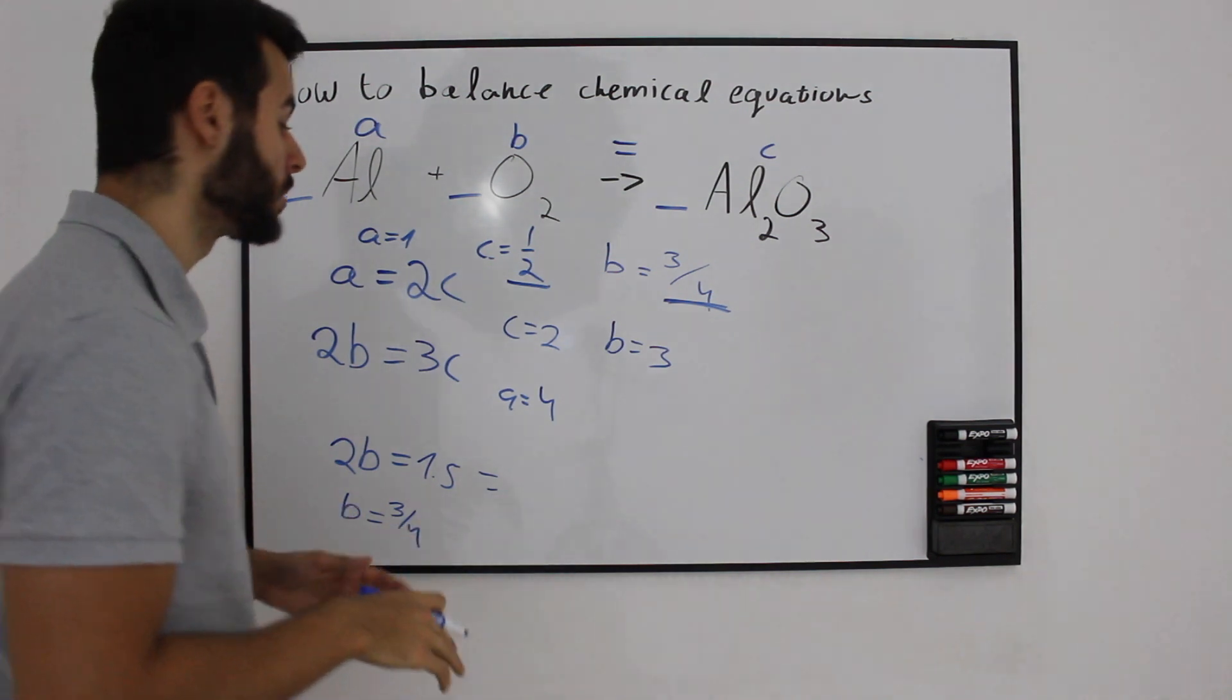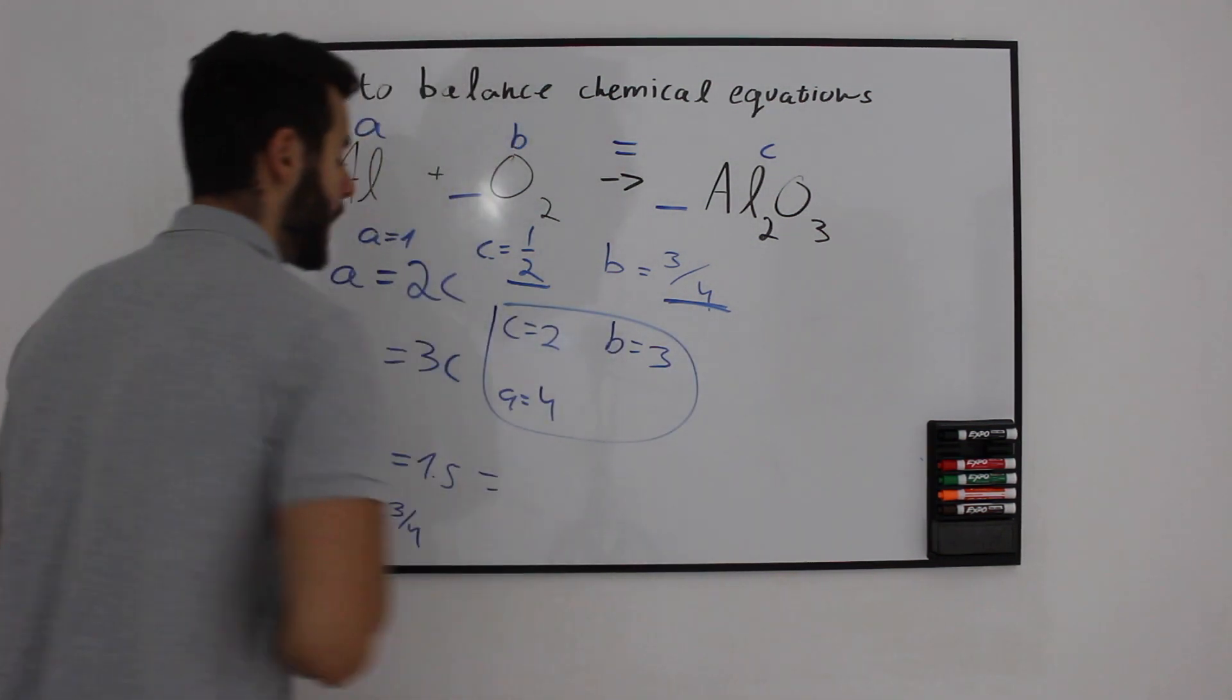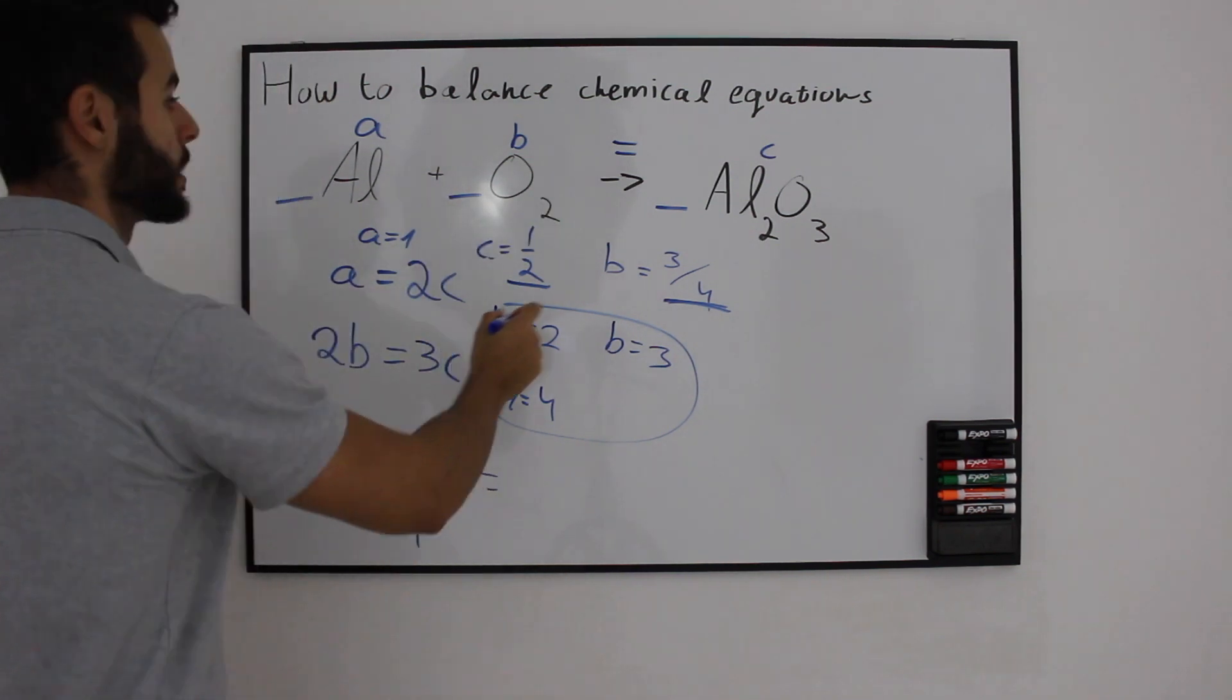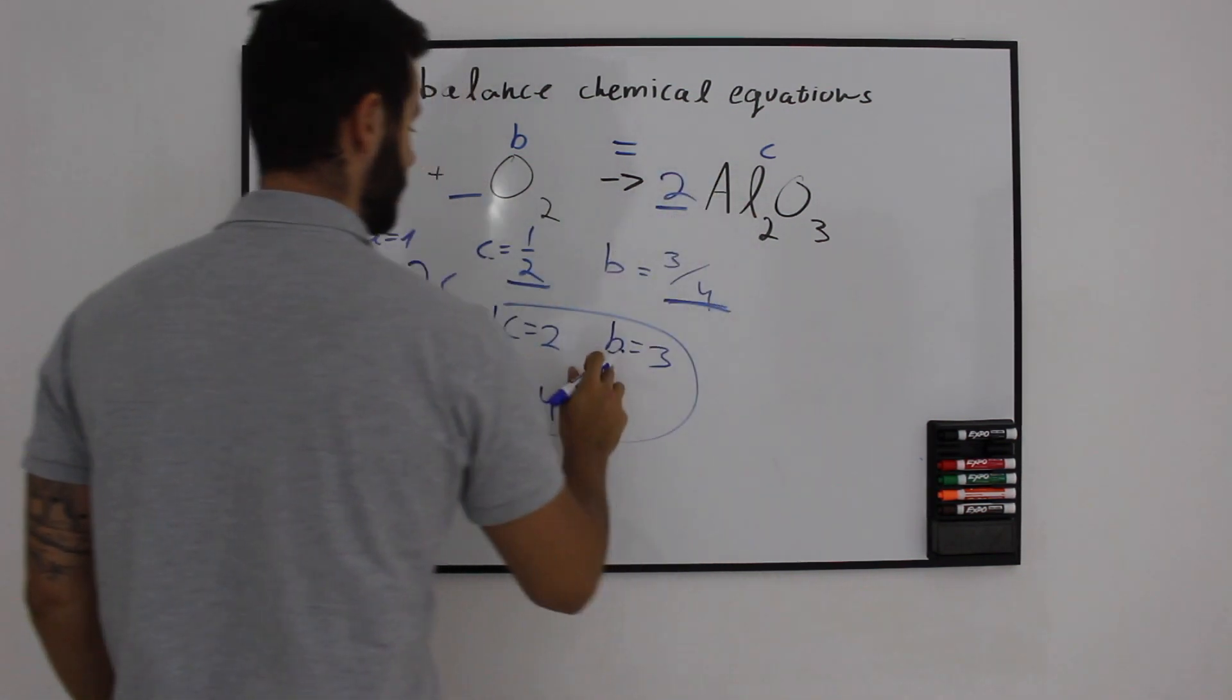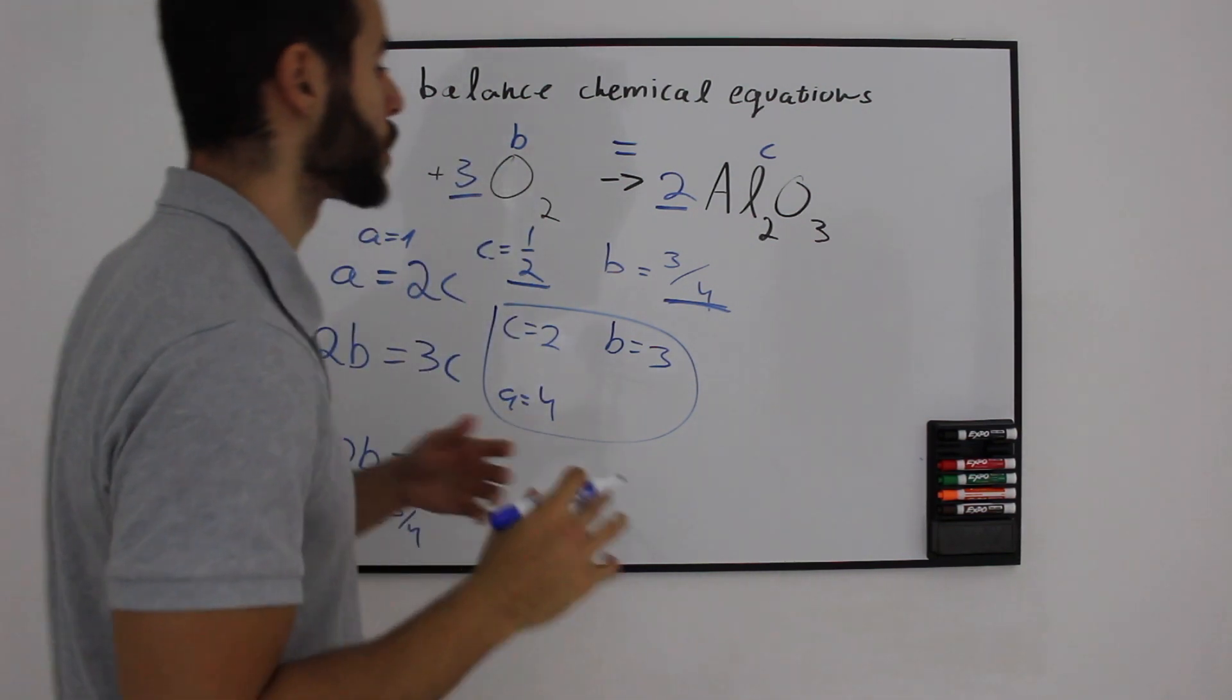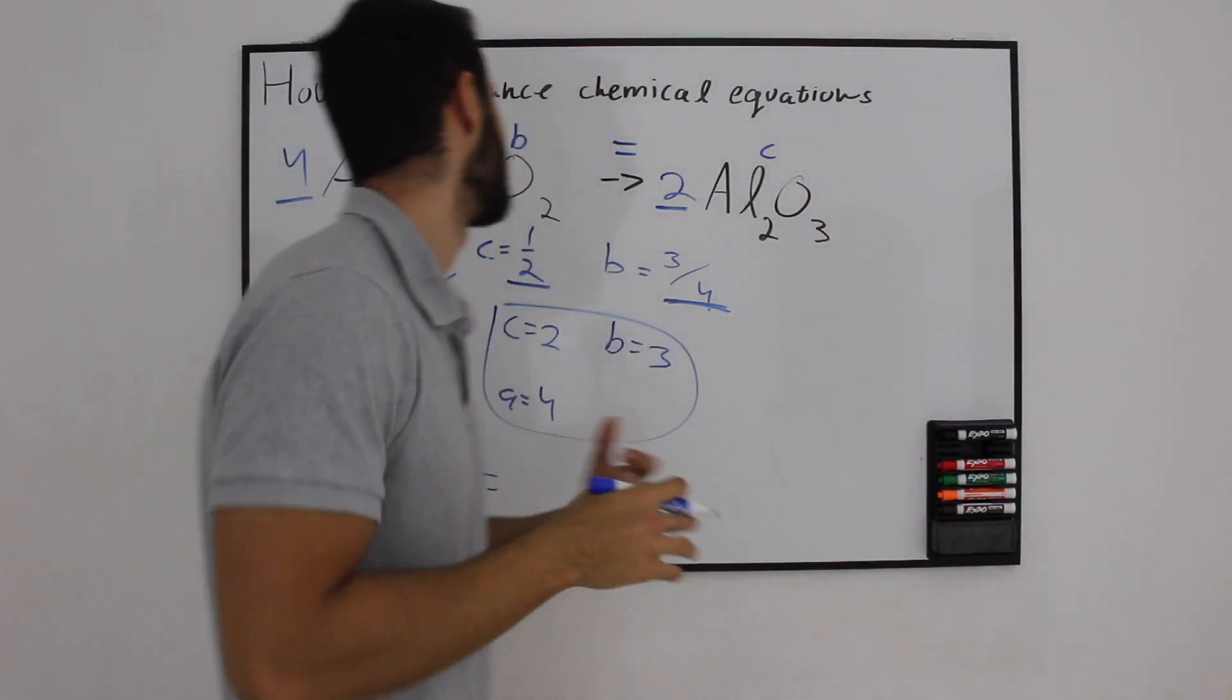We are just going to take the following numbers we just found and put them inside our equation. So C equals 2, B equals 3, and A equals 4. And now we should check again to see if we are correct.